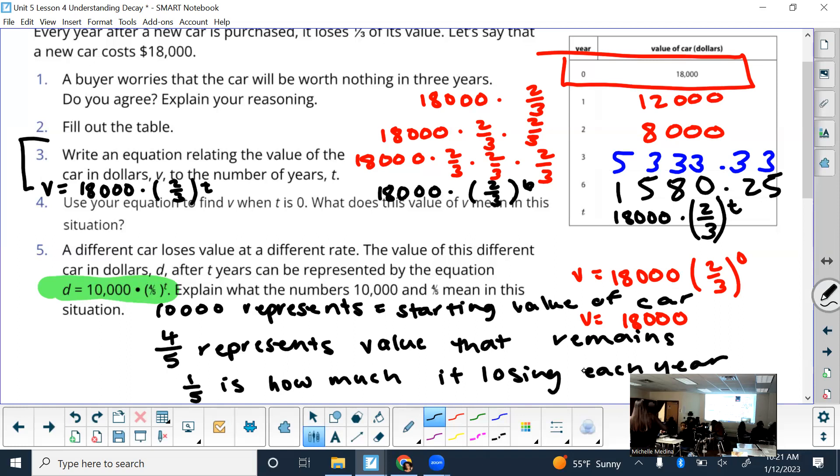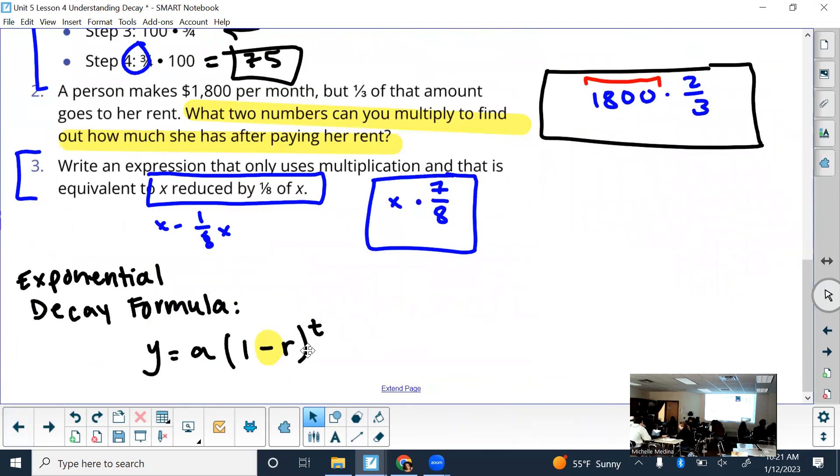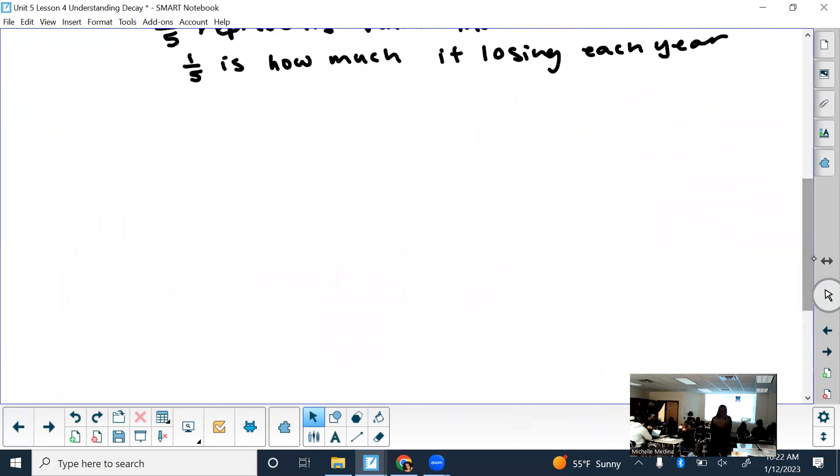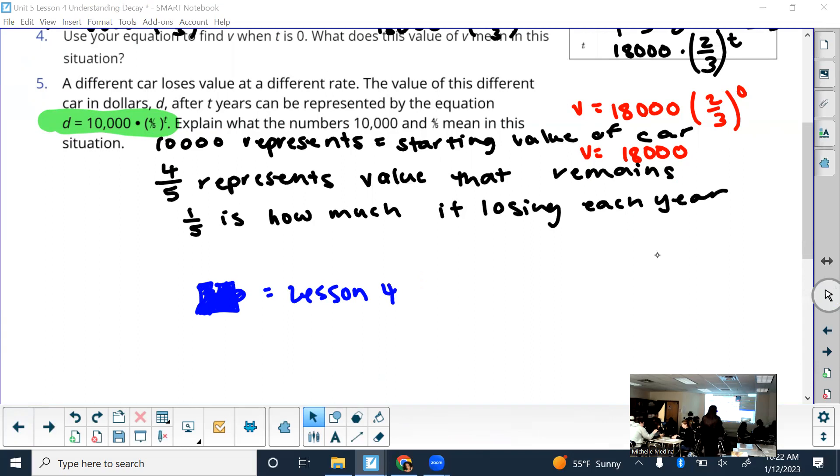Now a different car is losing value at a different rate. In your groups, explain what the numbers 10,000 and four-fifths mean in this situation. Table five, what does the 10,000 represent? The initial value of the car. Table six, what does the four-fifths represent? Usually what's in the parentheses is your decay rate. But is it losing four-fifths of its value every year? What is it losing every year? The four-fifths represent the value that remains. One-fifths is how much it is losing each year. The four-fifths is what we'd actually multiply to get whatever its current value is. You have the remaining past time to do your lesson four puzzle piece or really any other puzzle pieces that aren't done yet.